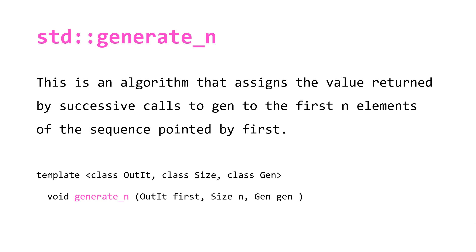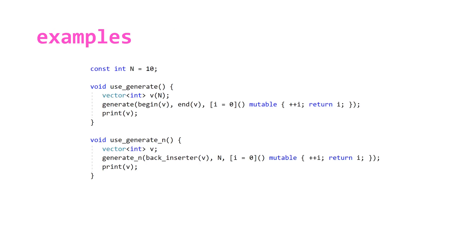Let's take a look at a couple of simple examples. Here we have two functions. At the top of the first, we declare a vector of integers using the fill constructor, initializing it to have 10 elements. Then we make our call to generate, passing the begin and end iterators. Our third parameter is a lambda — our generator — which initializes an integer zero in its init list, and for each call does a pre-increment on i and returns the current value.